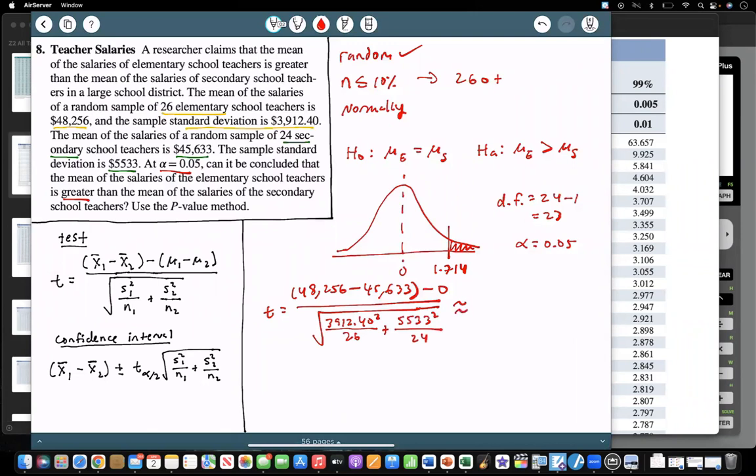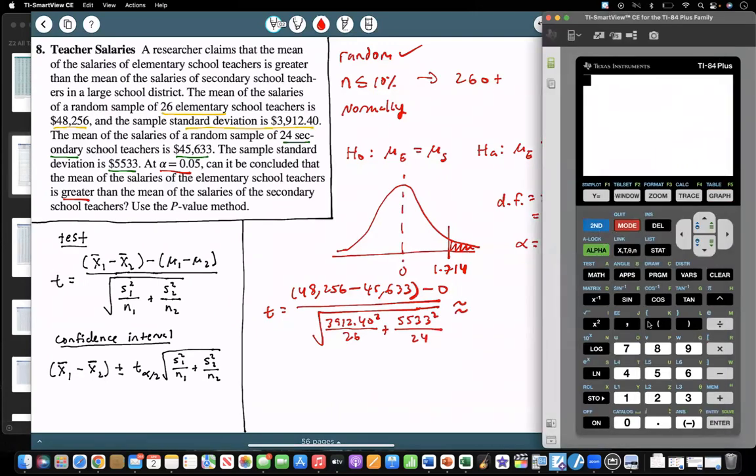So we can go ahead and type that in. So I'll go ahead and type this in a fraction. So the 48,256 minus the 45,633. I'll do square root. You don't need to put the bottom in a fraction, you could just use division. PEMDAS says to do a division before addition, so if you just put the division of each of those, it'll do those first before adding them. But just to make it look exact, I'll type it in the fraction. So 3912.40 squared over the 26, and then we'll add on another fraction, 5533 squared over the 24. So it looks like that'll give us about 1.92.